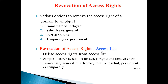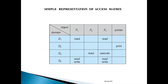What is an access list? In an access list, rows contain domains and columns contain objects. For every object, the access list maintains an ordered pair containing the domain name and the access right. For example, the access list for object F1 will contain (D1, read) and (D4, read and write). Similarly, for F3 it may contain (D1, read), (D3, execute), (D4, read and write). For every object, what domain it operates in and what access rights are allowed is maintained as a list — that is called the access list.